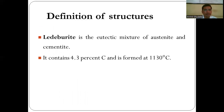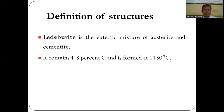Ledeburite is the eutectic mixture of austenite and cementite. It forms at 4.3% carbon and a temperature of 1,130°C (or 1,147°C). It is a somewhat brittle structure composed of austenite and cementite.